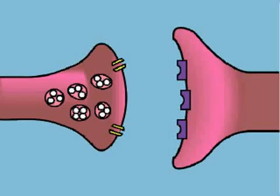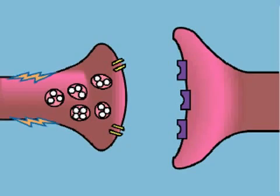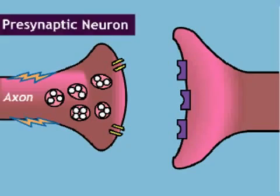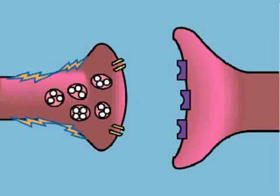Communication between two neurons begins when an electrical impulse called an action potential travels along the axon of a presynaptic neuron toward the axon terminal.